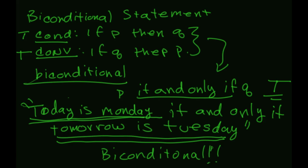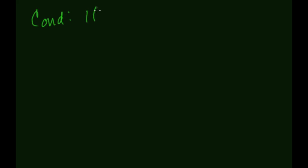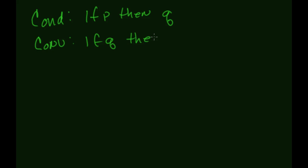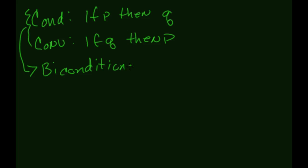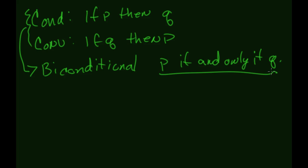In summary: you have a conditional statement, which is 'if p then q'; you have its converse, which swaps p and q — 'if q then p'; and if both are true together, you get a biconditional, written as 'p if and only if q.' That's a basic summary of this section. We'll work with these more in class next time.